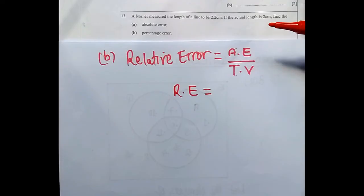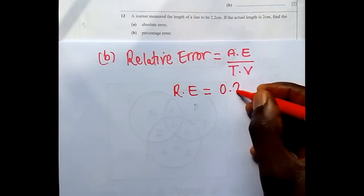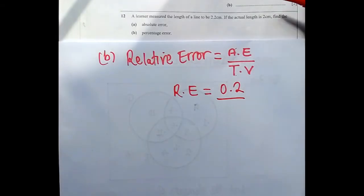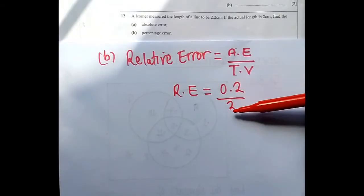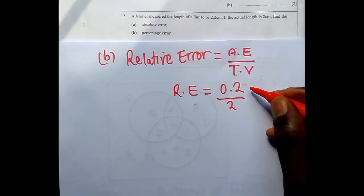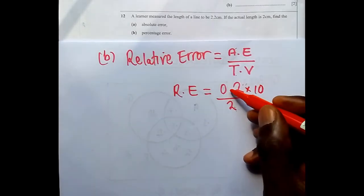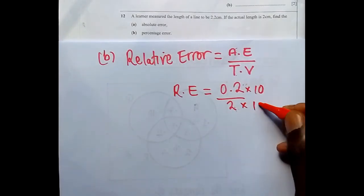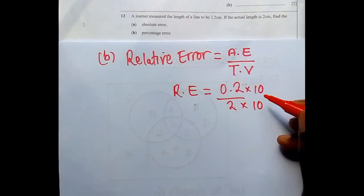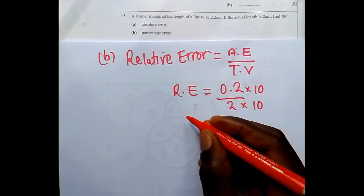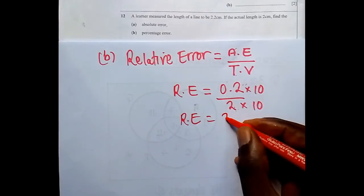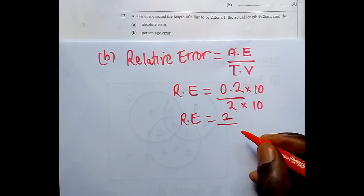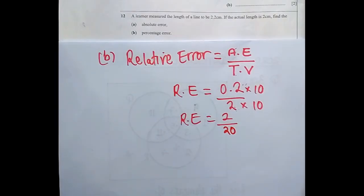The absolute error calculated in part (a) was 0.2, and the true value given is 2 centimeters. To simplify 0.2 over 2, we multiply both numerator and denominator by 10, giving us 2 over 20. Dividing 2 by 20 gives 0.1, so the relative error is 0.1.